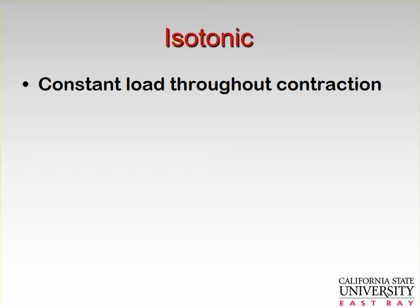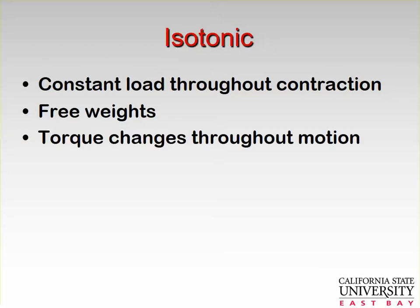Isotonic means a constant load throughout contraction — that's when we pick up a dumbbell or any weight that doesn't change its load during the contraction phase. So free weights are isotonic. However, the torque changes throughout the motion, because torque equals force times the external moment arm. That external moment arm changes all the time while the load does not, so the load is constant but the torque changes.